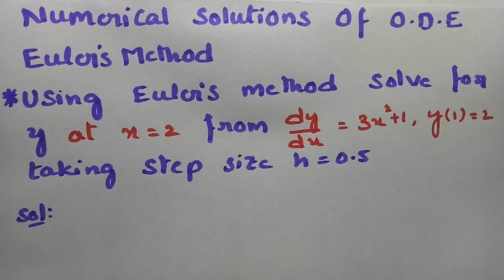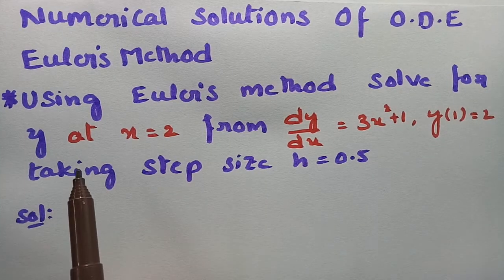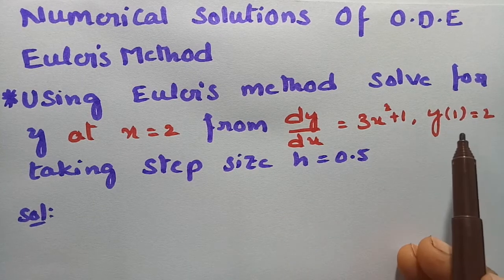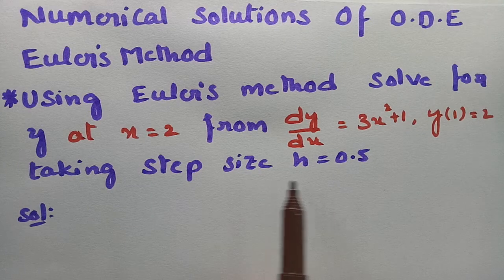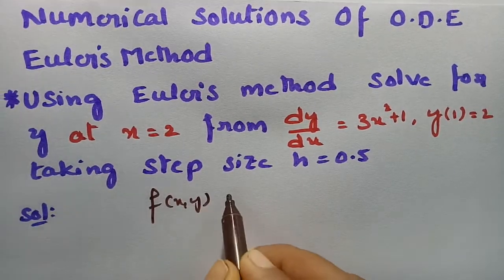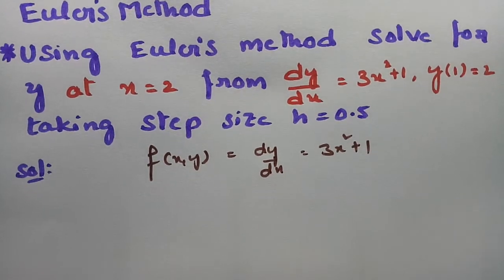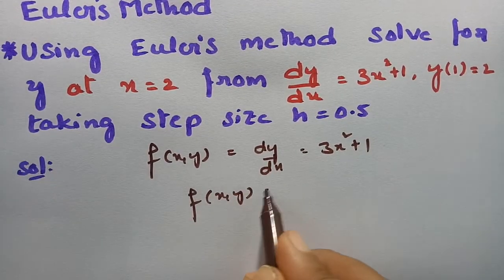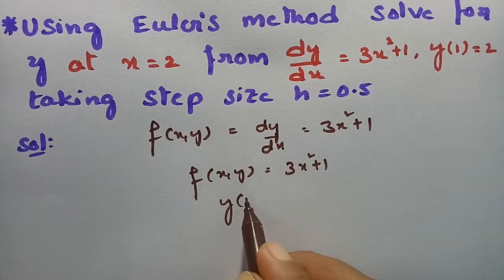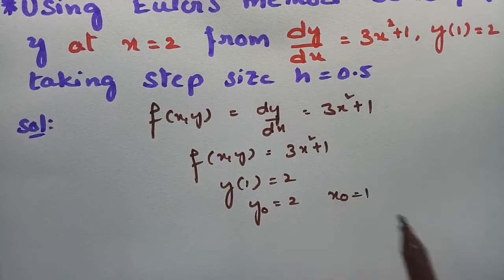Here is the problem from numerical solutions of ordinary differential equations. Using Euler's method, we have to solve for y at x equal to 2, from dy/dx equal to 3x squared plus 1, given y at 1 is equal to 2, taking the step size h equal to 0.5. Here it is given that f(x, y) = dy/dx = 3x squared plus 1. It is given that y(1) = 2, which means y₀ = 2 and x₀ = 1.